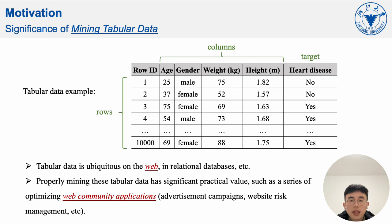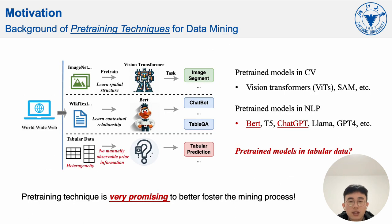In the vast online world, tabular data plays a crucial and widespread role as an information carrier. Here is an example of tabular data. Fully exploring and utilizing tabular data can further optimize a range of applications in the web community. Given the recent impact of large-scale pretrained language models like ChatGPT across various domains, exploring the potential of pretraining techniques on tabular data has emerged as a highly promising research direction.